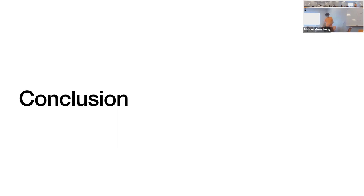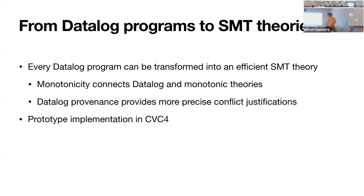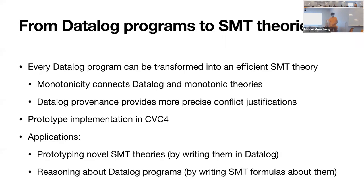That brings me pretty close to the end of the talk. I've talked about this idea of datalog programs being turned into SMT theories, making the claim that every datalog program can be transformed into an efficient SMT theory. The key connection is monotonicity — this connects datalog and monotonic theories and is what makes things work. On top of this, we can use datalog provenance to get more precise conflict justifications. We've prototyped this and explored a couple of applications: prototyping novel SMT theories by writing them in datalog, and reasoning about datalog programs by writing SMT formulas about them.